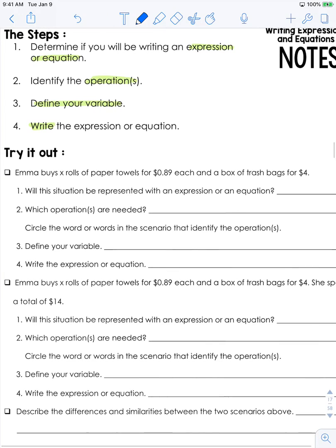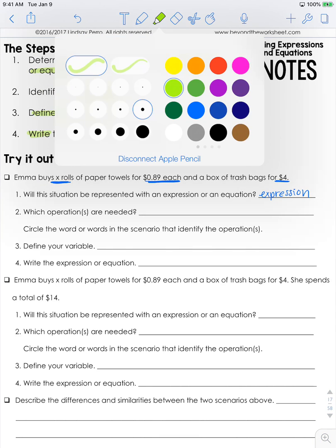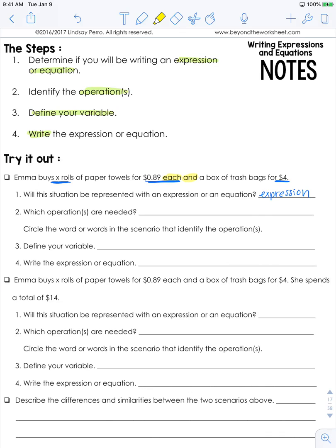Let's look at this question: Emma buys x rolls of paper towels for 89 cents each and a box of trash bags for 4 dollars. We do not know how much she spent in all, so we are going to be writing an expression. Now it's time to go back and look and see what keywords are in here. I see the word 'each' and the word 'and,' so if I'm reading this, I hear that we are going to be needing multiplication and addition.